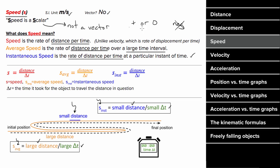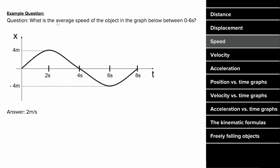What does an example problem for speed look like? If you had this graph and wanted to determine the average speed between zero and six seconds, you'd have to remember that average speed is distance per time. The distance between zero and six seconds would be four plus four plus four, giving 12 meters of distance. The time it took to travel that 12 meters was six seconds, which gives us an average speed of two meters per second.